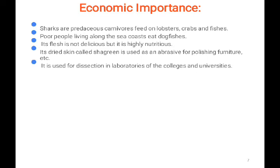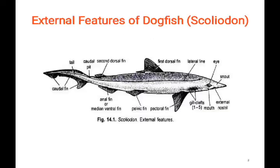The shark has small placoid scales arranged in a single direction, giving a rough surface-like structure. That is why it is used as an abrasive for polishing furniture. It is also used for dissection in college and university laboratories, though at the University of Mumbai the dissection of shark is no longer practiced. Now let us see the external features of the shark.